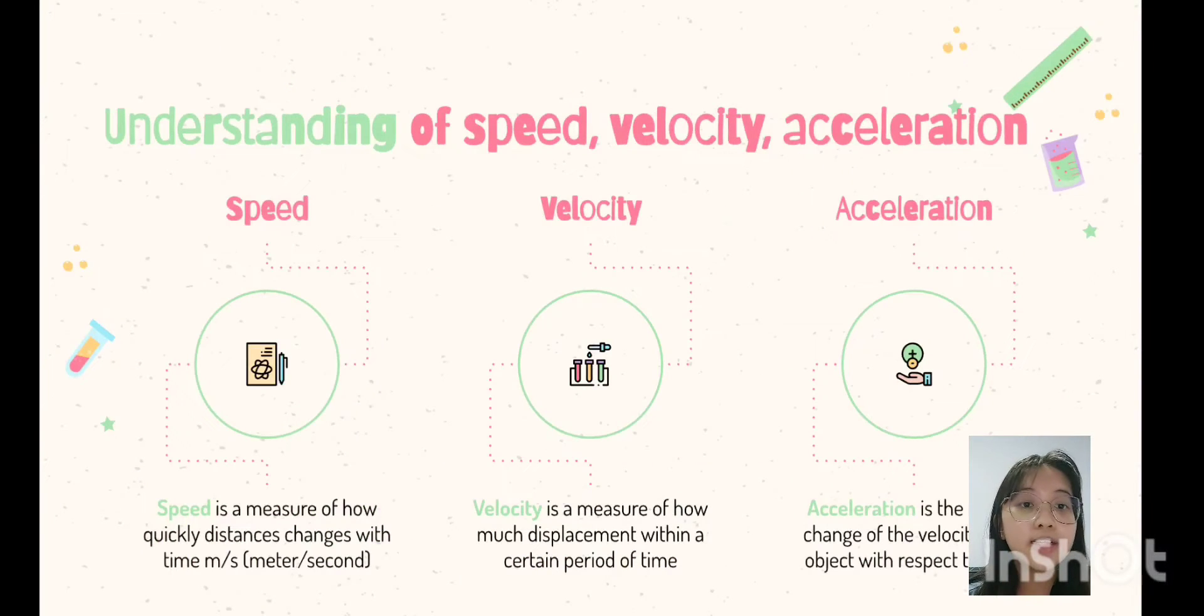Speed is a measure of how quickly distance changes with time, while velocity is a measure of how much displacement within a certain period of time, and acceleration is the rate of change of the velocity of an object with respect to time.